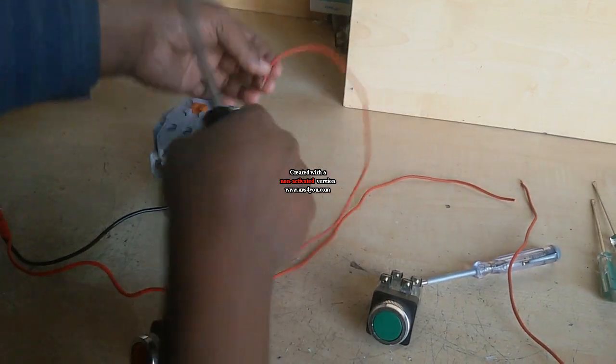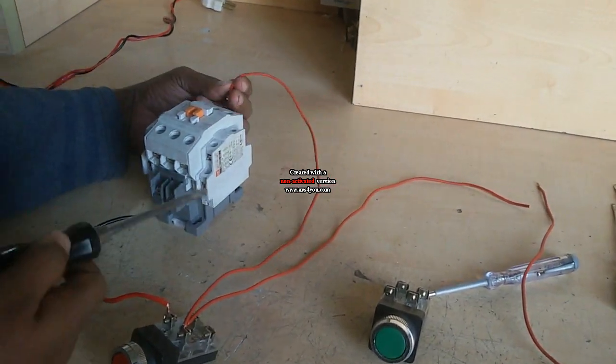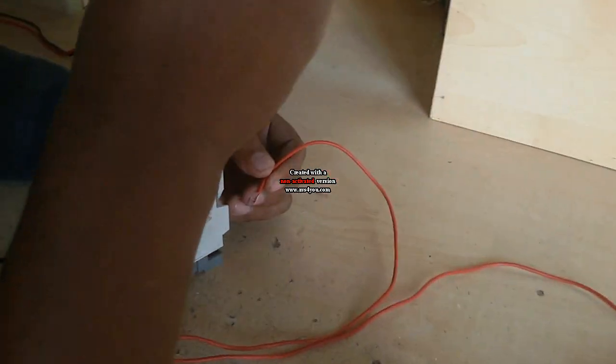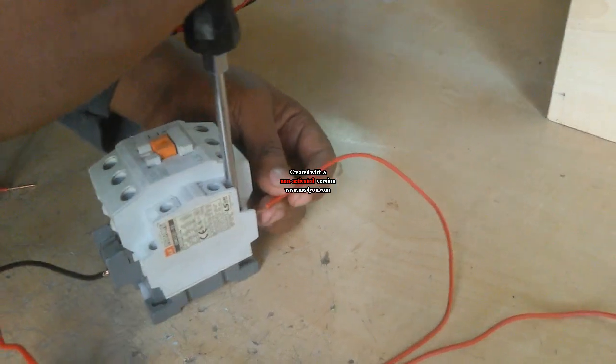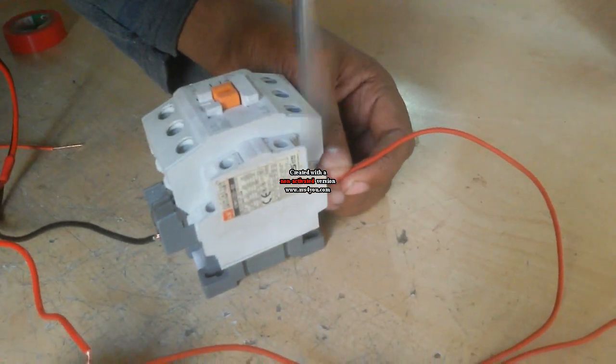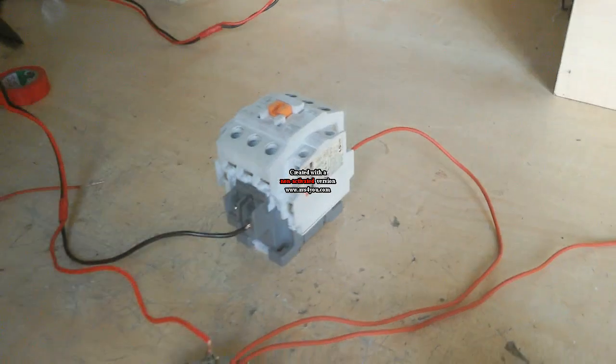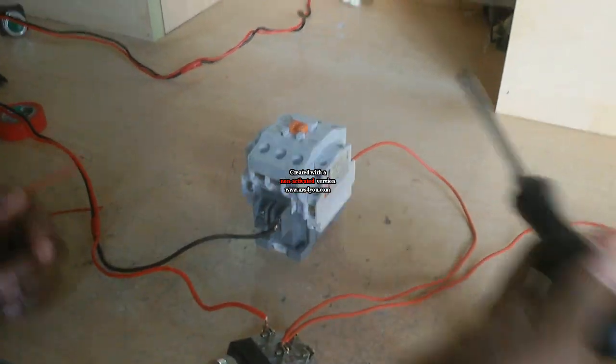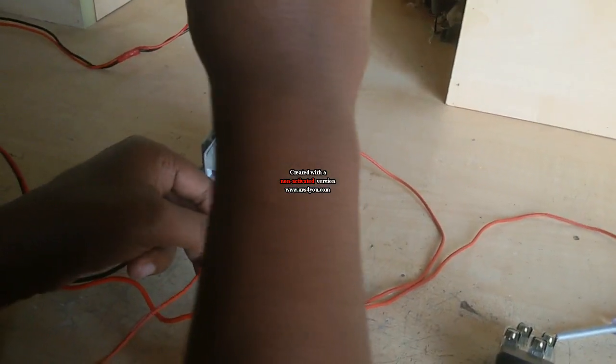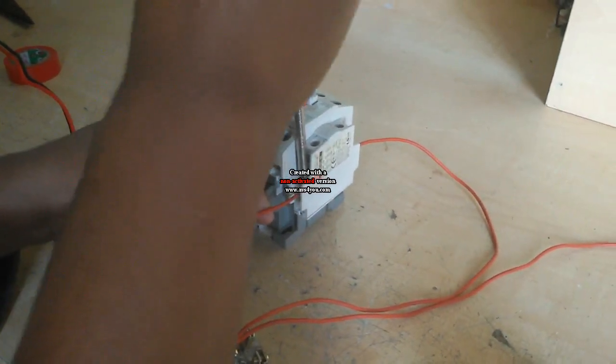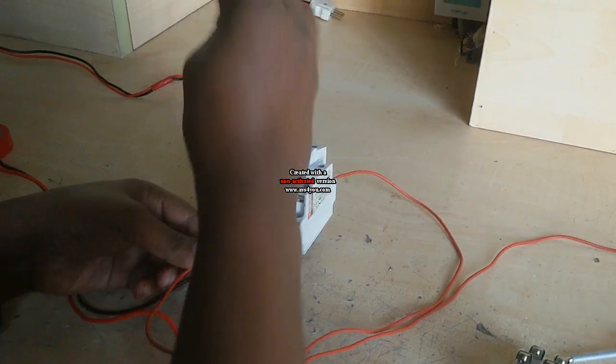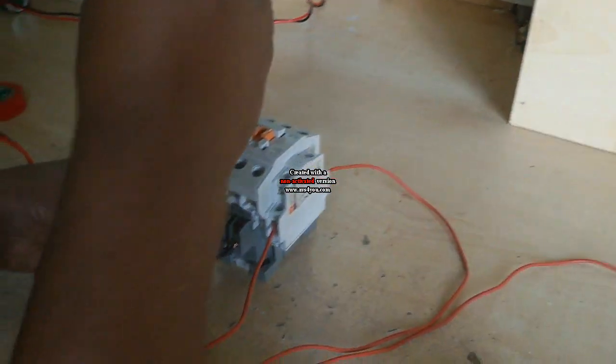Now I use a NO. Connect this wire inside of normally open and this normally open other side connects other wire, it connects to holding coil A2 terminal.